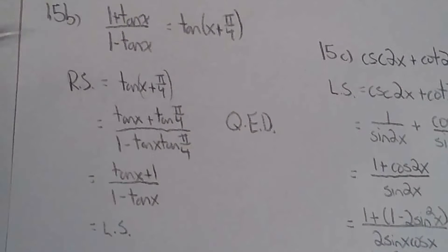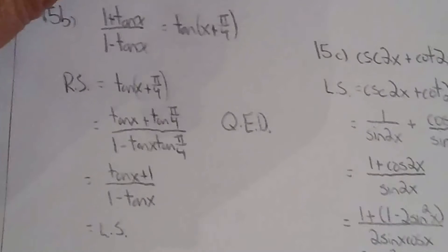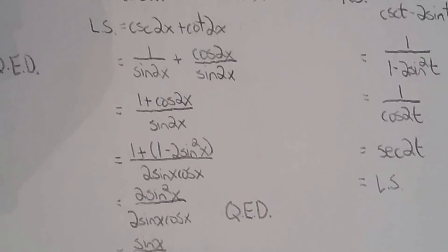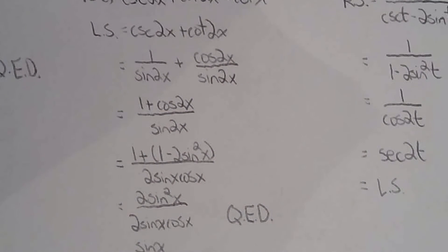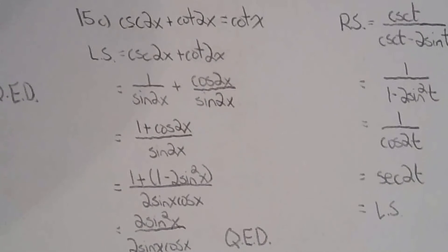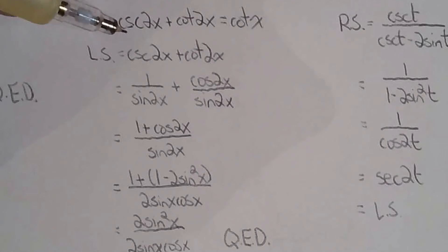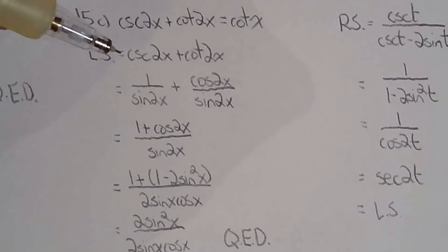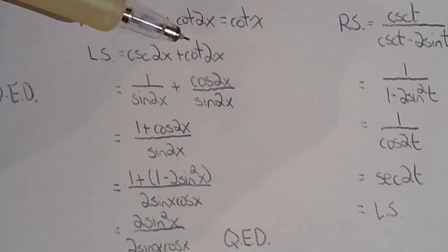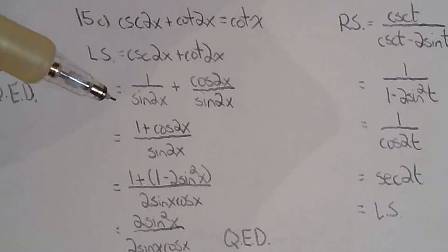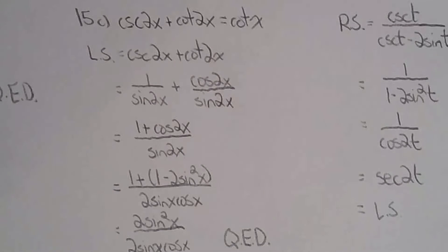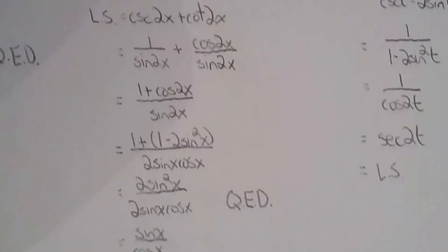For 15b, use the addition formula for tan on the right side and it works out. For 15c — cosecant 2x plus cotangent 2x equals cotangent x — definitely work with the left side. Use the reciprocal identity, the quotient identity, simplify, then apply double angle formulas to get cotangent x.